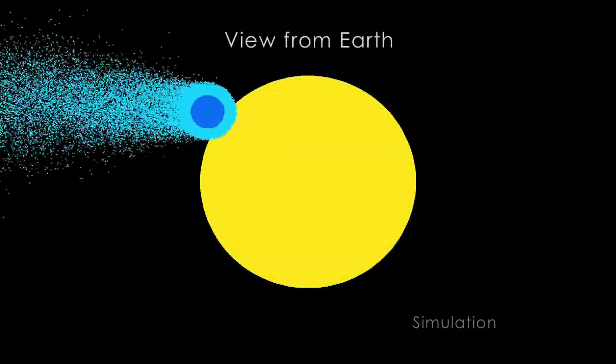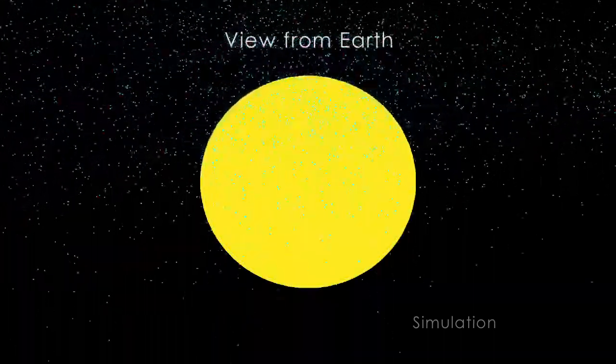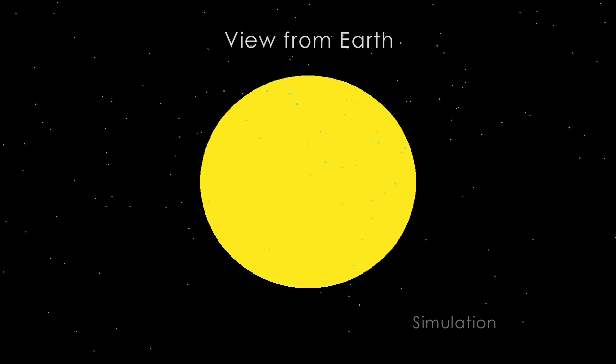Since the planet passes in front of its star as we see it from Earth, astronomers were able to use the Hubble Space Telescope to establish that the atmosphere was evaporating.